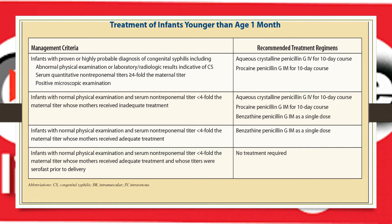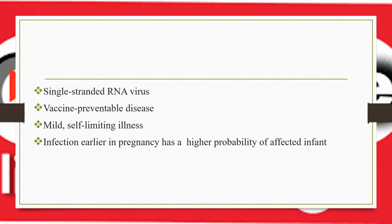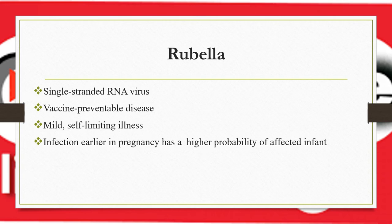Congenital rubella infection causes the most severe damage when the mother is infected early in pregnancy, especially during the first 12 weeks. Rubella is a single-stranded RNA virus causing mild, self-limiting illness. Infection in the first trimester has a higher probability of affecting the infant. Importantly, rubella is a vaccine-preventable disease — it is one of the TORCH infections that can be completely prevented.